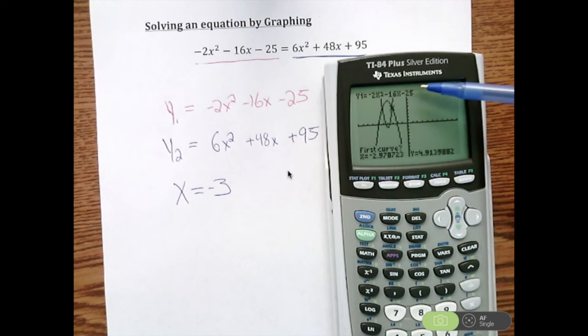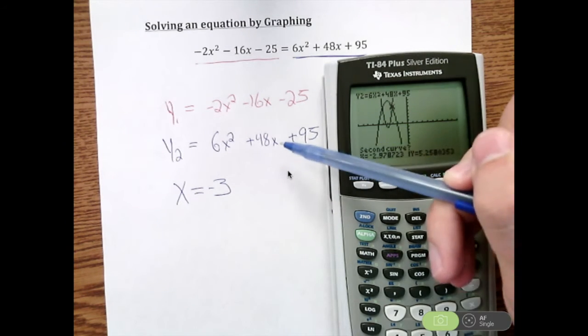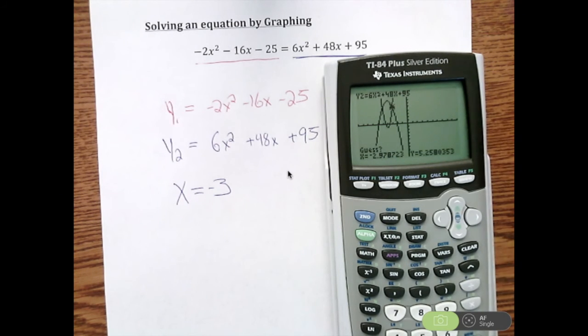And it's, again, going to ask you, do you want to use y1? Yes, I do. So hit Enter. Do you want to use y2? Yes, I do. So hit Enter. And it wants us to guess where that other intersection is at.